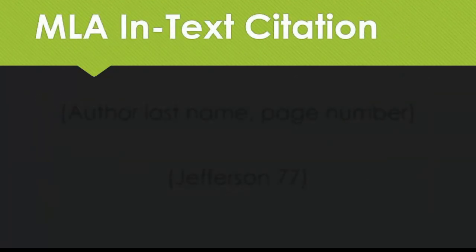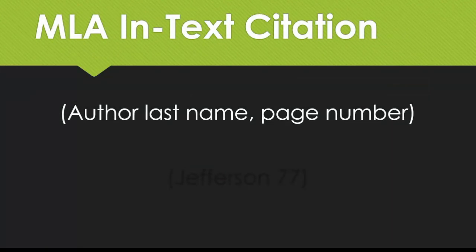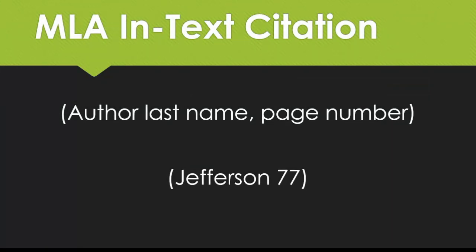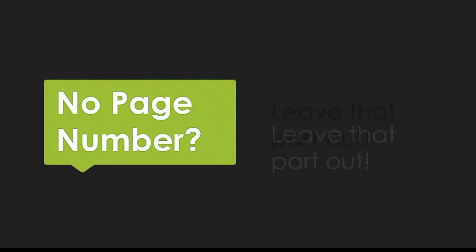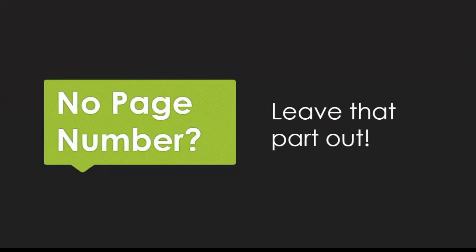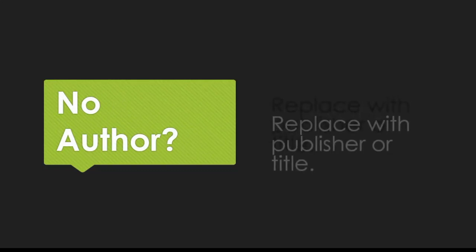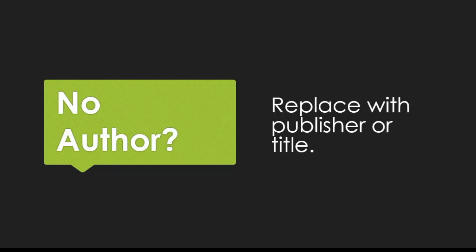In MLA, your in-text citation will usually include both the author's last name and the page number where this information was located. If you don't have a page number, you can leave that piece out. Or if it's a video or audio file, you can include a timestamp instead. If you don't have an author listed, you can replace that piece with either the name of the publishing organization or the title of the source.